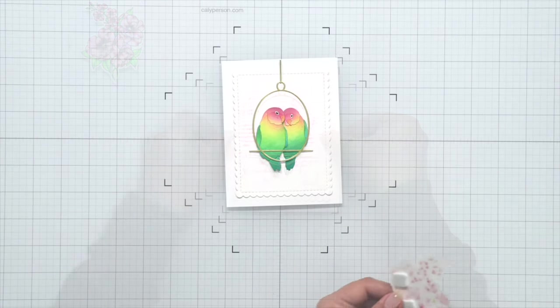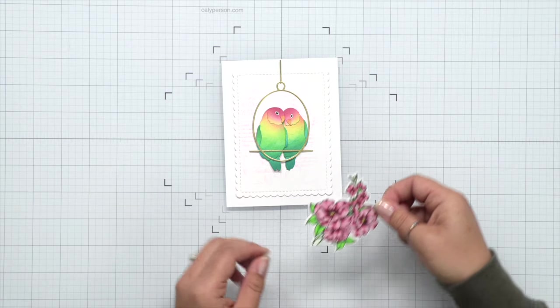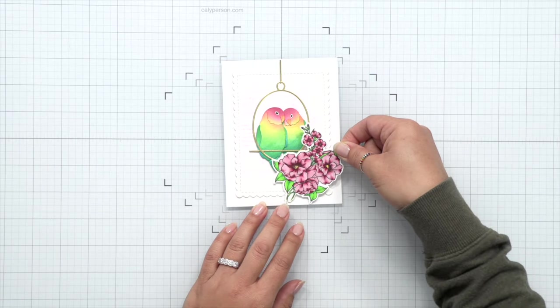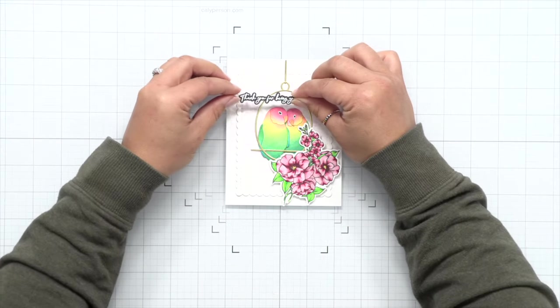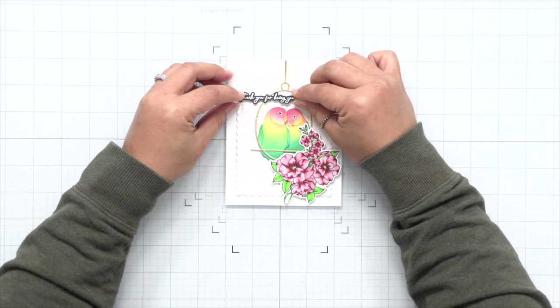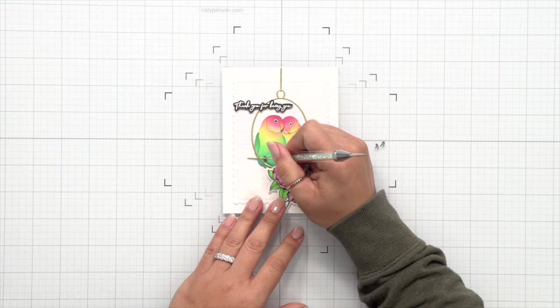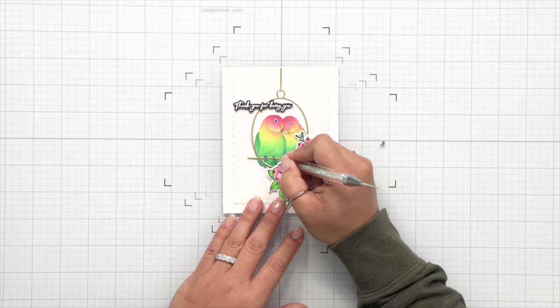Then I'll attach this to a card base. And then last but not least, I'm going to attach this little floral bouquet there at the bottom as if it was hanging off that bird ring. Then I'll finish with an embossed sentiment that I used from the Eternal Love stamp set as well.